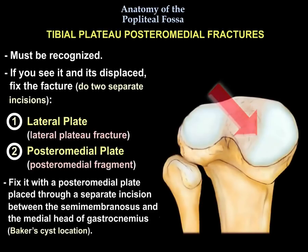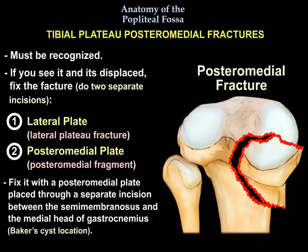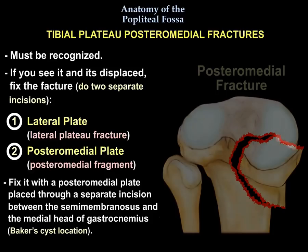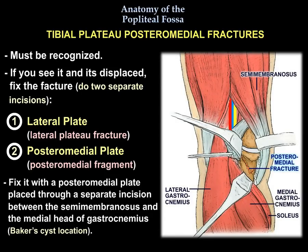Another clinically important entity connected to the popliteal fossa is the posteromedial fracture of the tibial plateau. This fracture must be recognized and, if displaced, requires fixation. Two incisions may be used — one for the lateral plateau fracture using a lateral plate, and a separate posteromedial incision for the posteromedial fragment using a posteromedial plate. This posteromedial incision is placed between the semimembranosus and the medial head of the gastrocnemius — the same location as Baker's cyst.